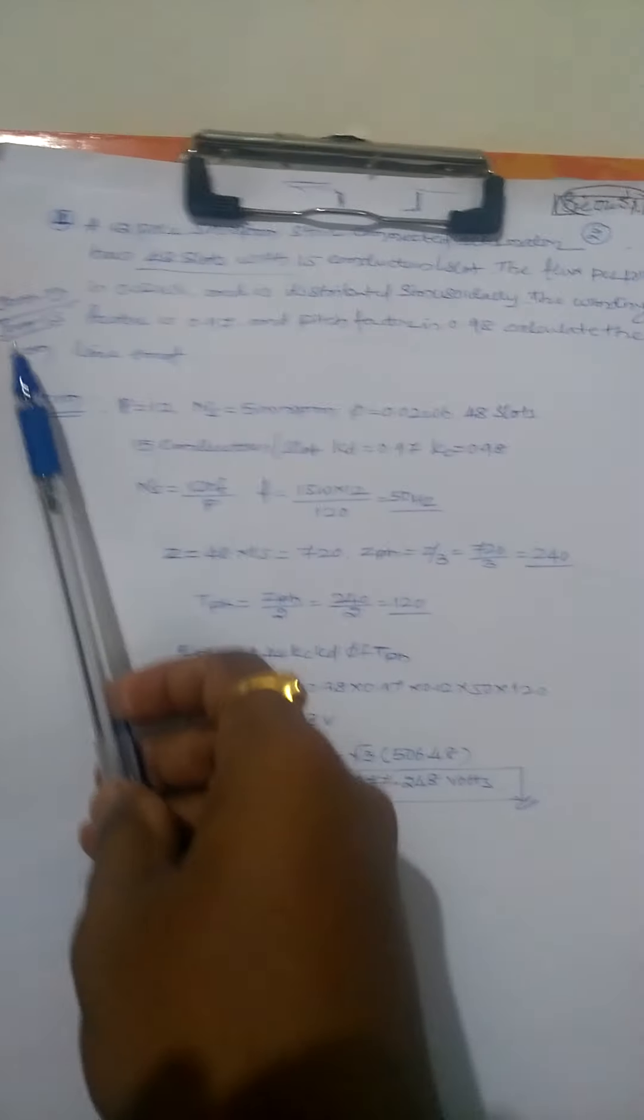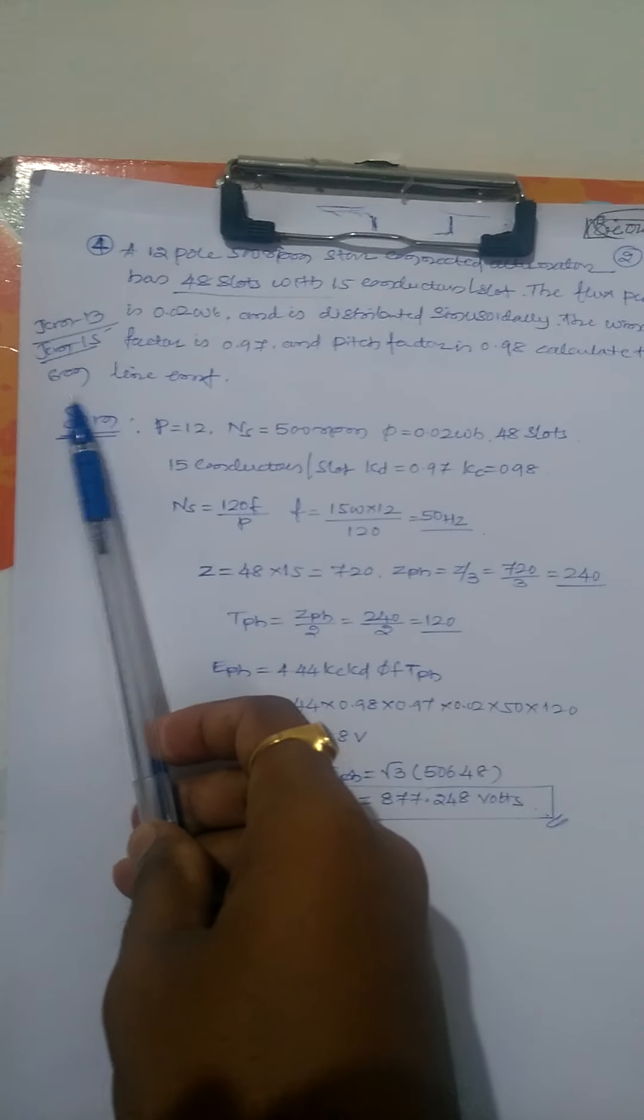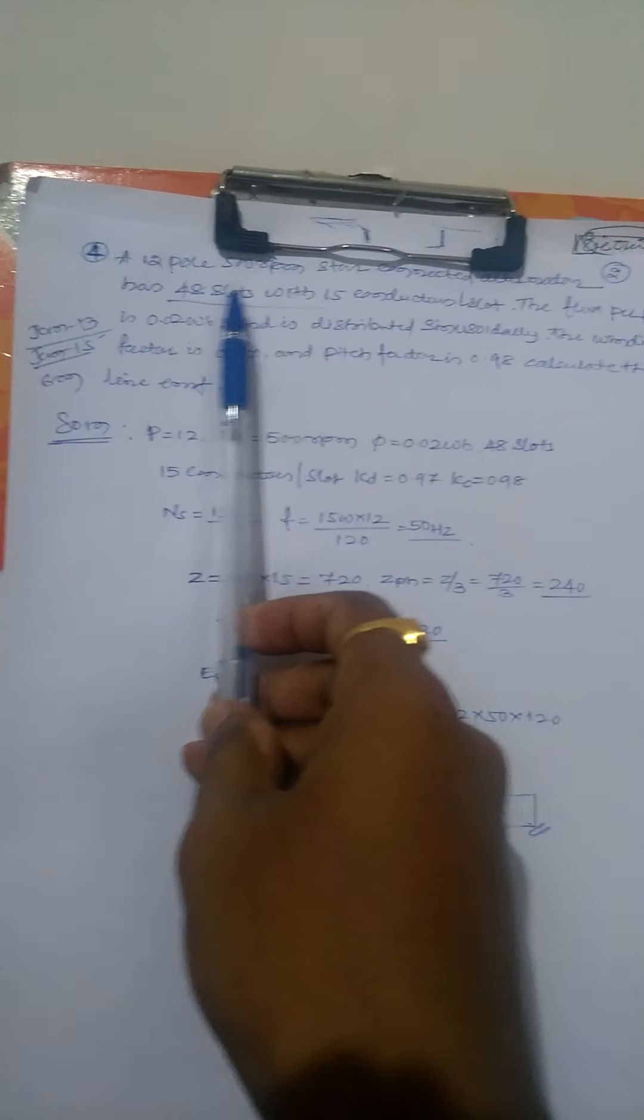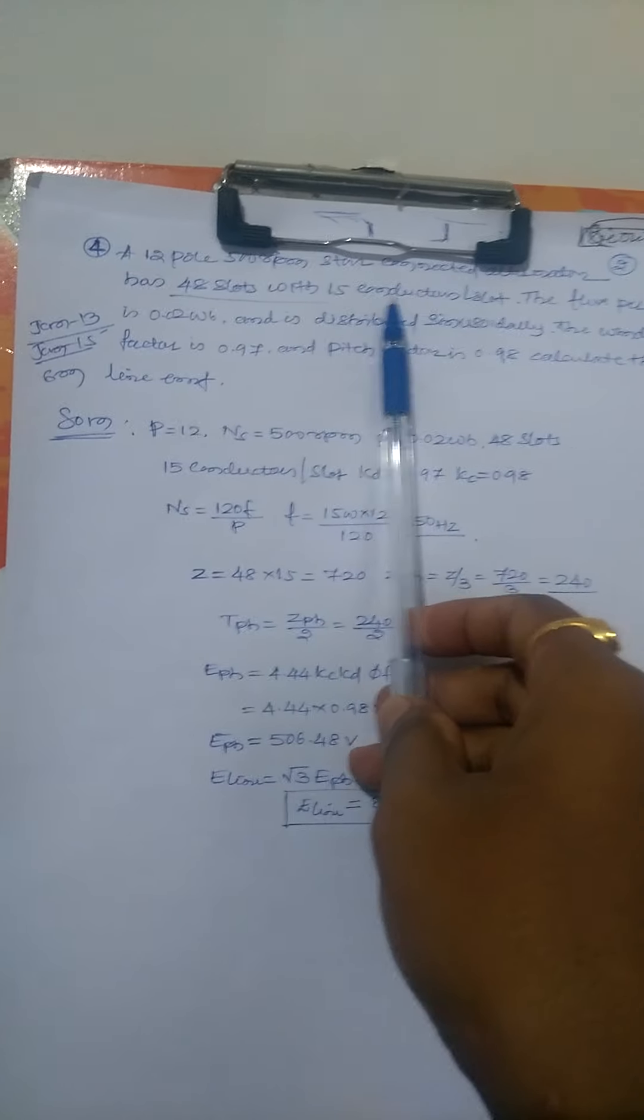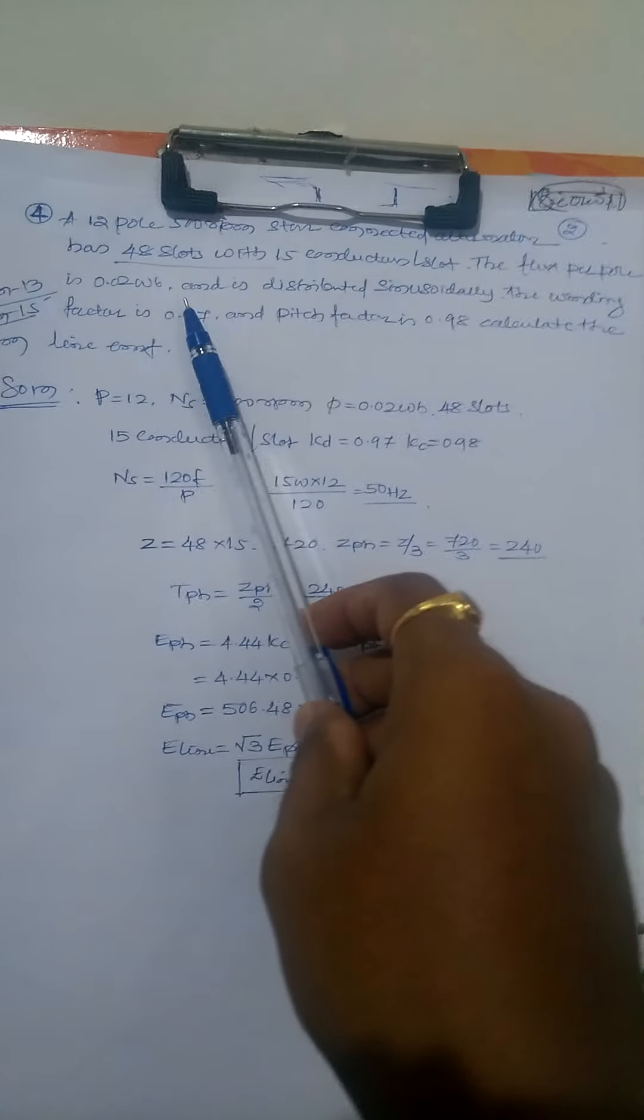Fourth problem is from 2013 and January 2015, worth 6 marks. A 12-pole 500 rpm star-connected alternator has 48 slots with 15 conductors per slot. The flux per pole is 0.02. The distribution factor and winding factor is 0.97, pitch factor 0.98. Calculate line voltage.